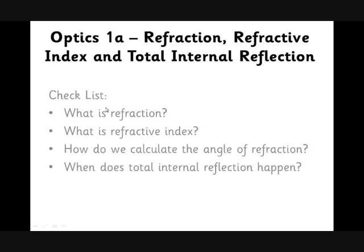We're going to do what is refraction, just in case anyone's forgotten from key stage three. We're going to do refractive index, which is the trickiest idea probably in this unit, and then we're going to use that to calculate angles of refraction. Then we're going to look at what happens if refraction can't happen in total internal reflection.